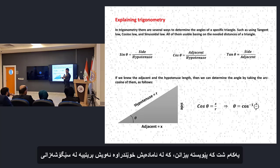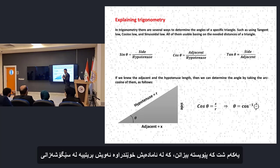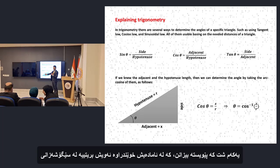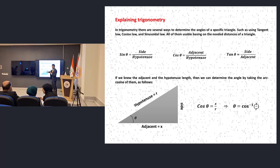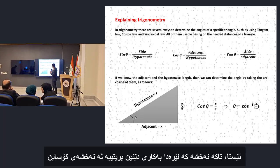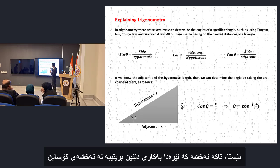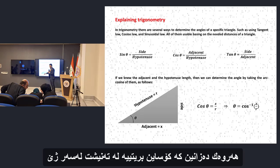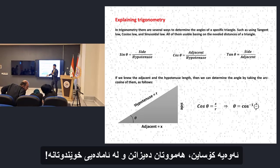The first thing you need to know is studied in high school, which is trigonometry. The only function we're going to use here is the cosine function. As we know, cosine is the adjacent over hypotenuse. That's what cosine is.